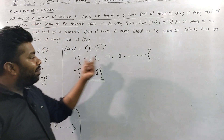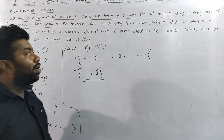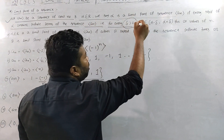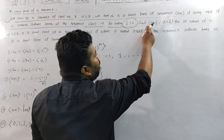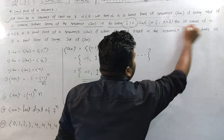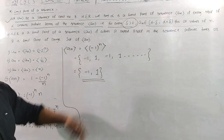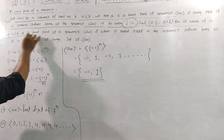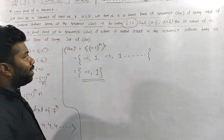That is, for every delta greater than zero, a_n belongs to (alpha minus delta, alpha plus delta) for infinitely many values of n. Alpha in R is a limit point of a sequence (a_n).